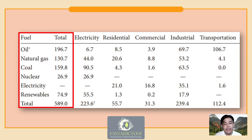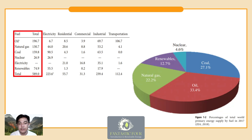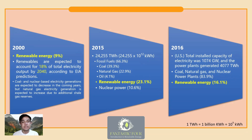This table shows that total global energy supply was 589 quad BTU, of which fossil fuels accounted for 82.7 percent. Renewable energy, including hydroelectric power — which is environment-friendly and can be harvested indefinitely — was responsible for 12.7 percent of total global energy supply, while nuclear power supplied the remaining 4.6 percent. This slide shows the percentages of total world primary energy supply by fuel in 2017.